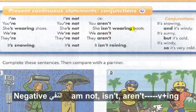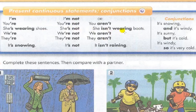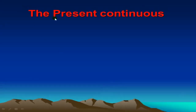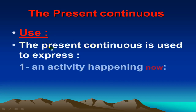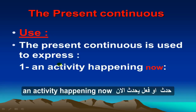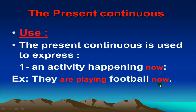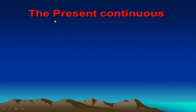Wearing boots. Negative: I am not, are not, is not — verb plus -ing. Why do we use the present continuous tense? The present continuous is used to express an activity happening now — something happening now. Example: They are playing football now.